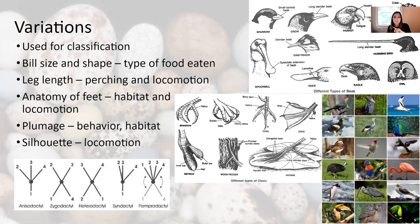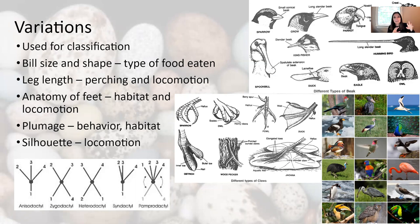The silhouette of birds can sometimes give you a clue to their habits and their identification. Sometimes you might see a bird flying across the sky without seeing its color or specific details, but that silhouette can still give a clue. We'll look at the silhouettes of the different bird orders.